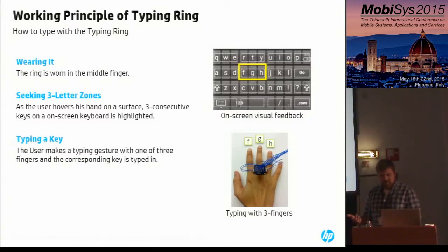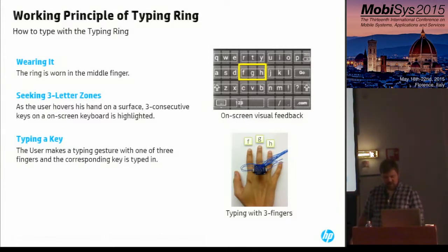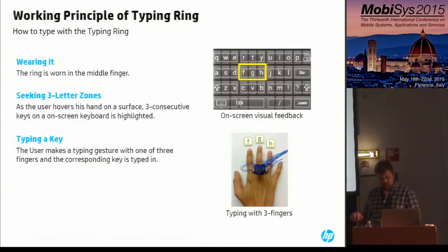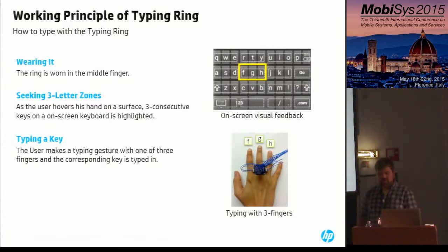Typing Ring is designed around typing with three fingers. The user wears it on the middle finger and enters text as if there's an invisible standard keyboard underneath the hand. By moving the hand horizontally and vertically, Typing Ring distinguishes one region from another on the imaginary keyboard. As the user hovers the hand on a surface, three consecutive keys on an on-screen keyboard are highlighted — we call this a zone, and the process of finding it the zone-seeking process. By pressing one of the three fingers, the user types the key under that finger, and embedded sensors surrounding the ring determine what key is pressed, then send the key event to a remote computer over a Bluetooth Low Energy link.